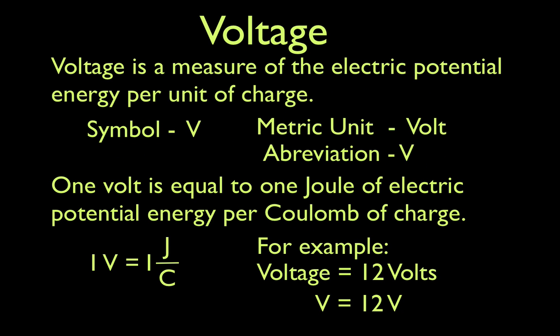Voltage is simply a measure of the electric potential energy per unit of charge. That might sound a little complicated, but really voltage is just the amount of energy that's given to the electrons in a circuit. Officially it's electric potential energy per unit of charge. When you plug something into the wall or attach something to a battery, you're giving the electrons energy — potential energy — because that energy can then be used to light a light bulb, make toast, turn the hairdryer on, or do work.